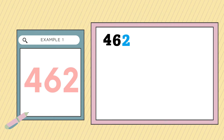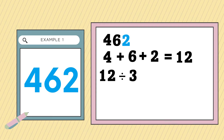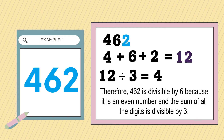How? We're going to add all the digits of 462: 4 plus 6 plus 2. 4 plus 6 is equal to 10, plus 2 is equal to 12. Let's check if 12 is divisible by 3. 12 divided by 3 is equal to 4 and there is no remainder. Therefore, 462 is divisible by 6 because it is an even number, divisible by 2, and the sum of all the digits is divisible by 3.